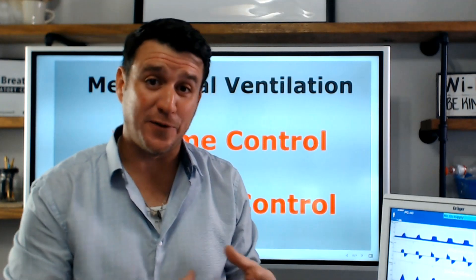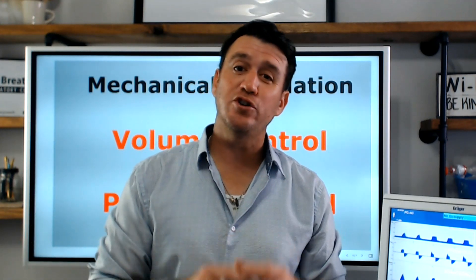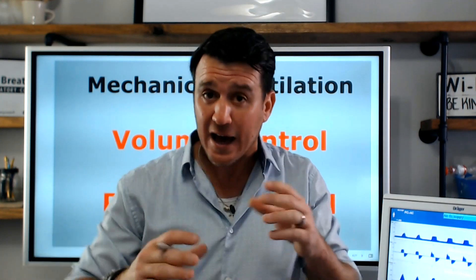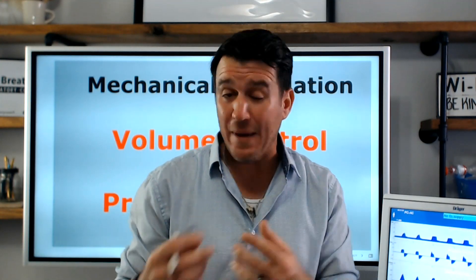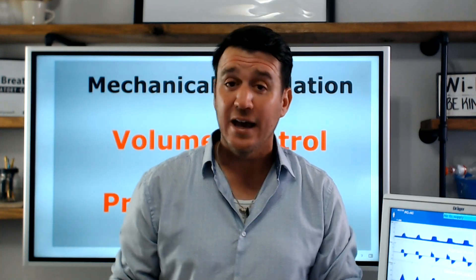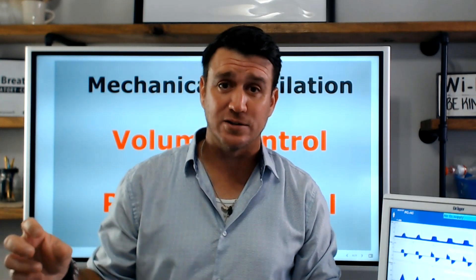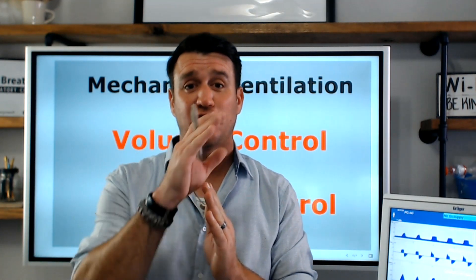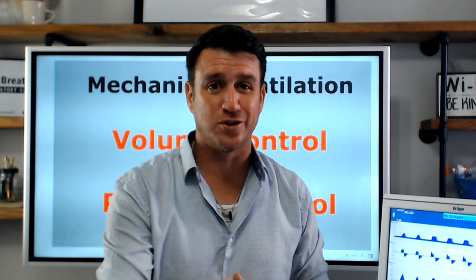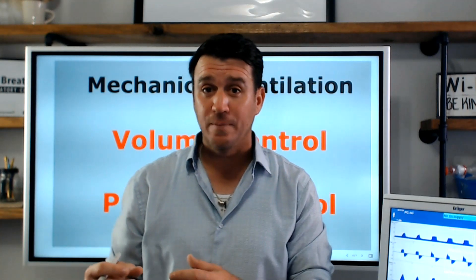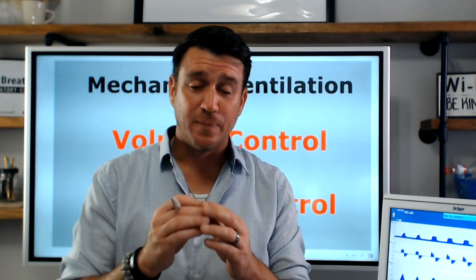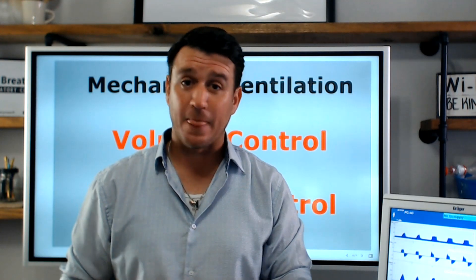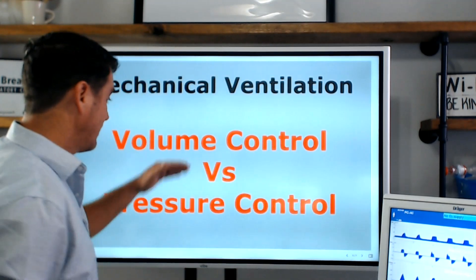So there you have it — that's volume control versus pressure control when utilizing waveforms to determine which mode you are in. Remember, volume control is always going to have either a constant flow pattern or a decelerating flow pattern, depending on your ventilator. But the key is the pressure waveform — you're always going to see this slow rising pattern. Remember: as volume goes, pressure grows. When talking about pressure control, you will always have a square pressure waveform and always a decelerating flow pattern. Always. That's the difference in volume control versus pressure control.